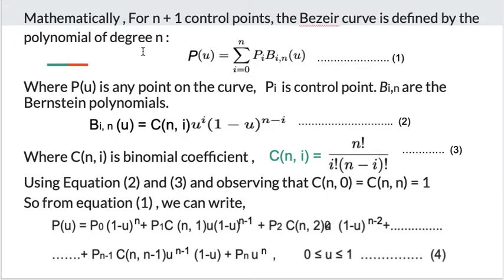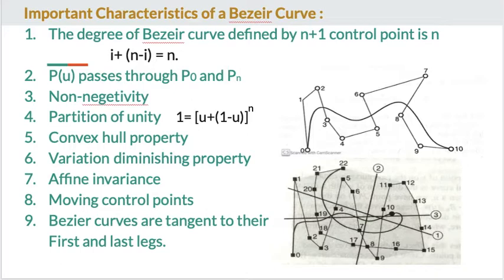Now we will see the important characteristics of a Bezier curve. First, the degree of Bezier curve defined by n+1 control points is n. In each basis function, the exponent of u is i + n - i = n, and therefore the degree of the curve is n.